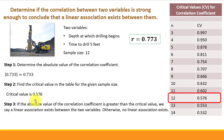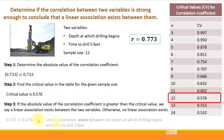Since a linear association exists between depth at which drilling begins and time to drill five feet, we can use one variable to predict the value of the other. In the context of this example, there is a way to determine how long it will take to drill five more feet if you know the starting depth. We'll learn all of that in the next video.